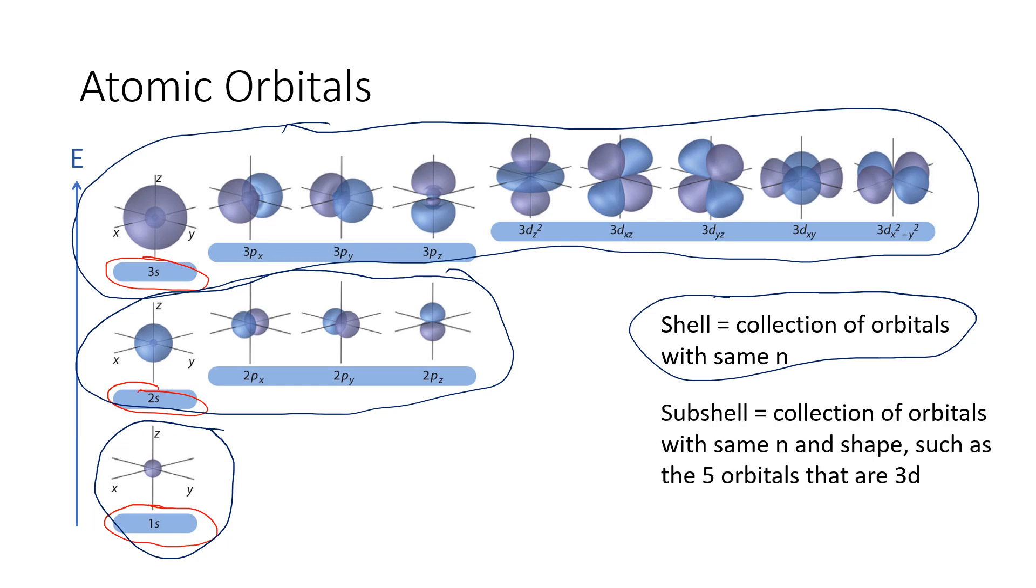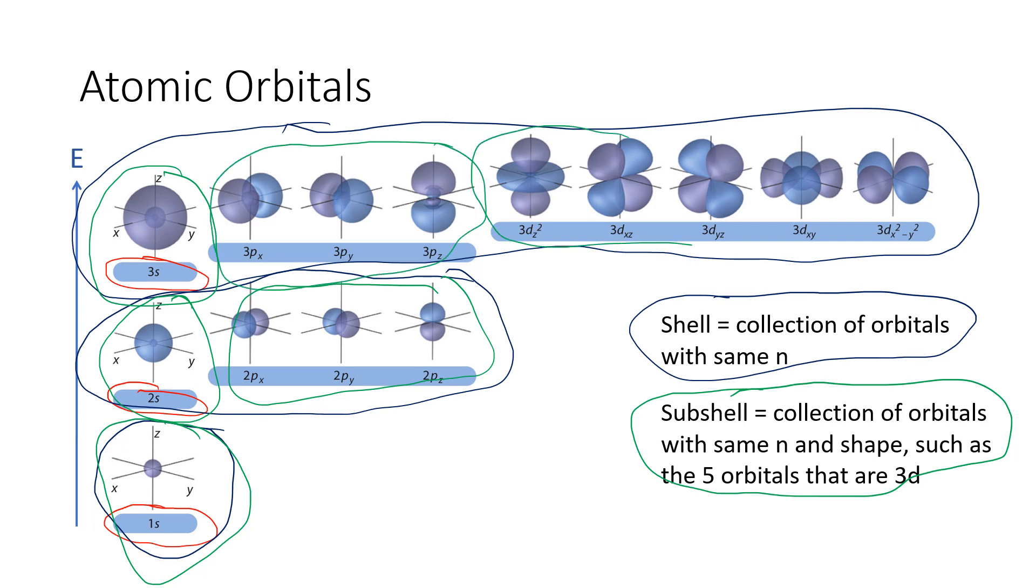Now a subshell is a collection of orbitals that has both the same number for n and the same shape, such as s, p, or d. And so let me pull a different color here. I think I'm going to do green. And let's look at all of the subshells that we have here. So I'm going to circle the subshells in green. So the 1s, or the first shell, also has the 1s subshell. The second shell has two subshells, the 2s and the 2p subshell. The third shell has three subshells, the 3s, the 3p, and the 3d.